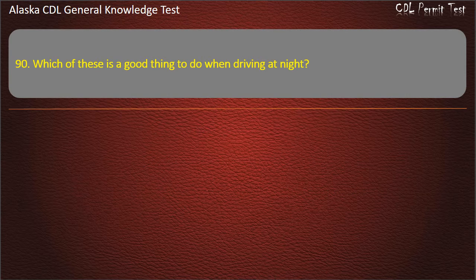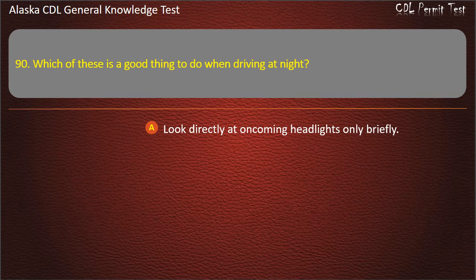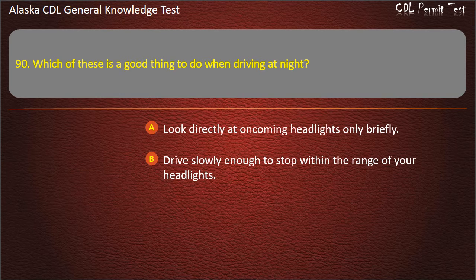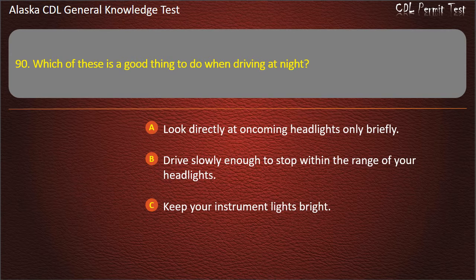Question 90. Which of these is a good thing to do when driving at night? Look directly at oncoming headlights only briefly, drive slowly enough to stop within the range of your headlights, or keep your instrument lights bright. Answer: Drive slowly enough to stop within the range of your headlights.